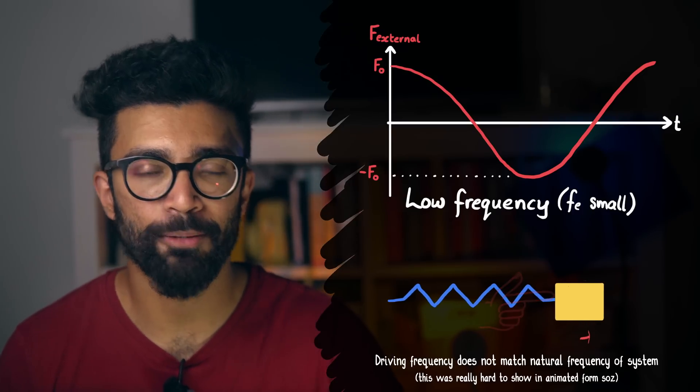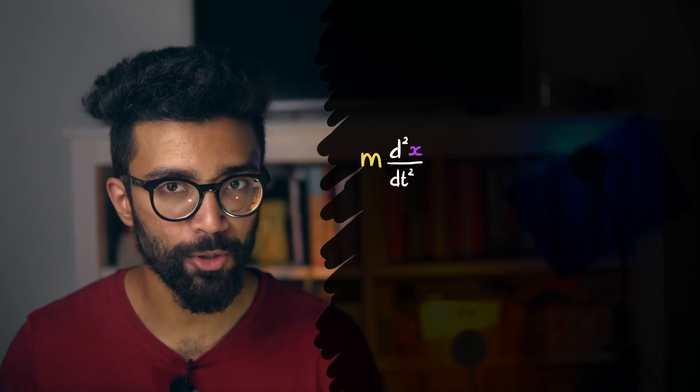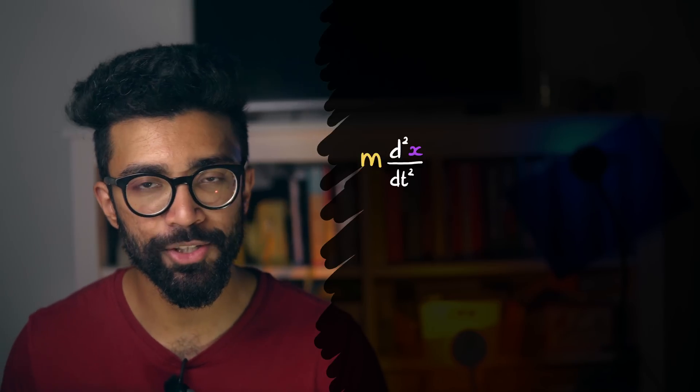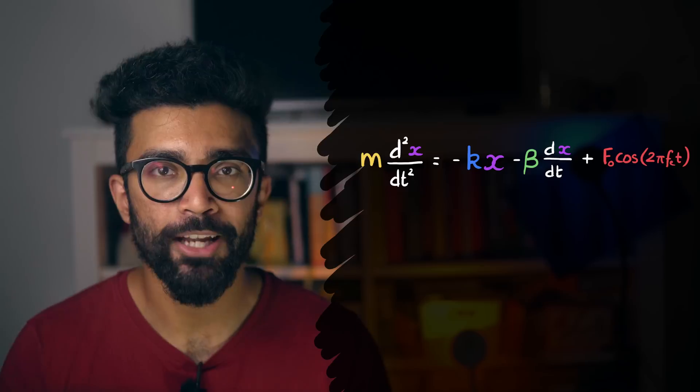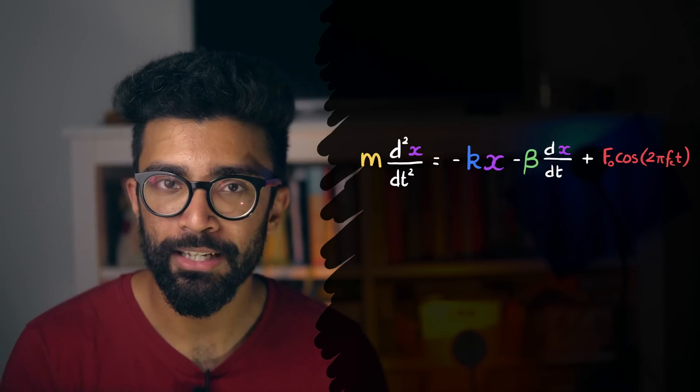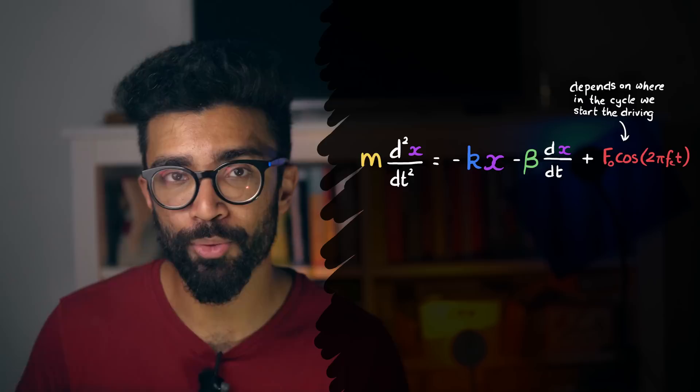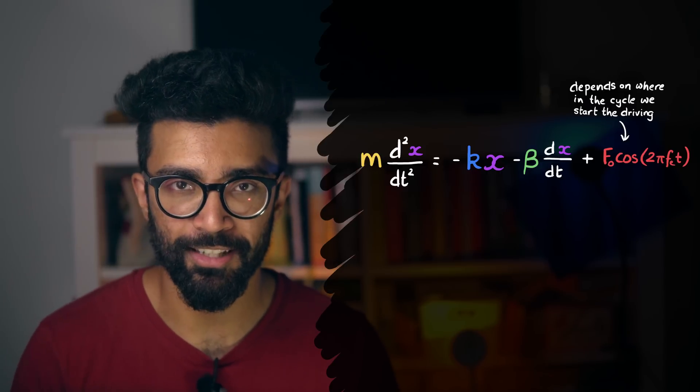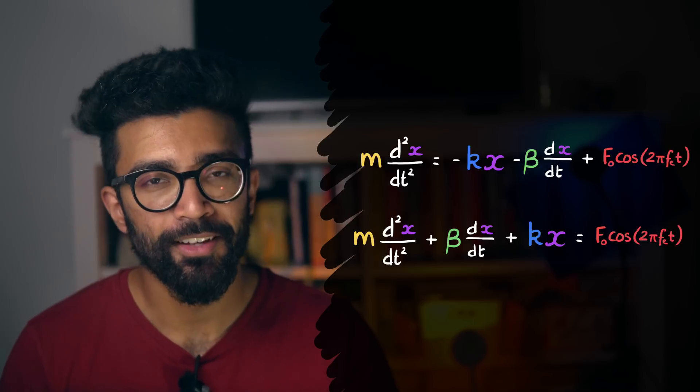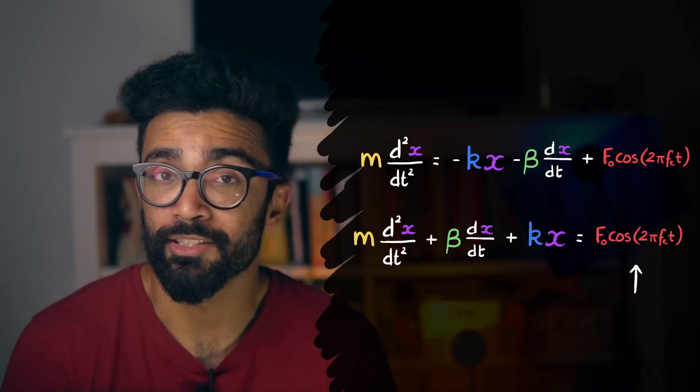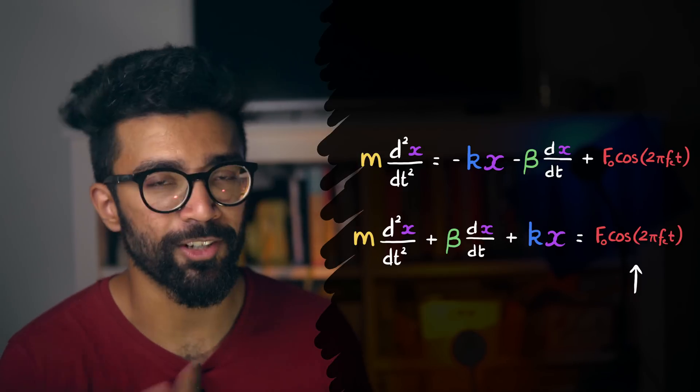But so how do we include this applied external force into our equations? Well, starting once again with the net force as mass times acceleration, we include the other forces from earlier and this time we also include the driving force. Now this force is positive just because initially its value was in the positive direction as we defined it. But it actually could have been a sine curve or something in between. It just depends on where in the cycle we decide to start at t is equal to zero. And once again we rearrange our equation. This time we'll keep the driving force on this side, though this is of course not necessary. We're rearranging in an arbitrary way based on what we think looks nice to us and this version looks nice to me.